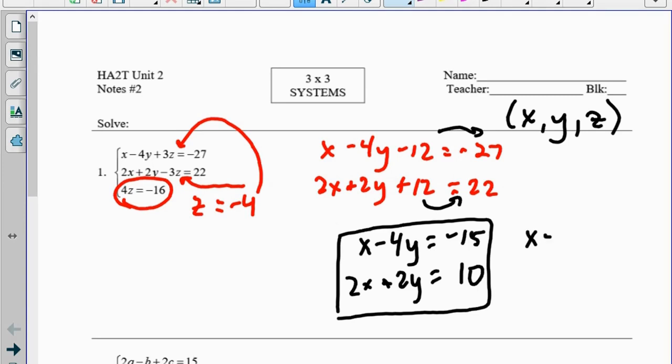So if I leave the top the same equation and multiply the bottom one by 2, and I can just add, I get 5x equals 5 and x equals 1.